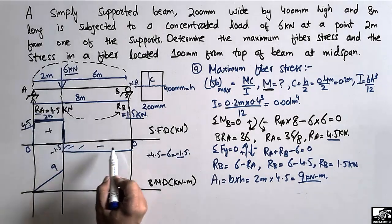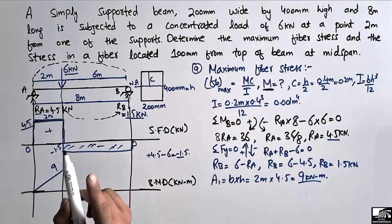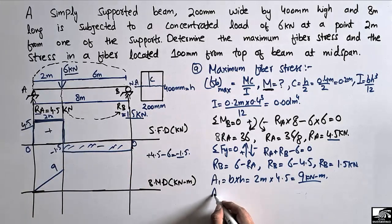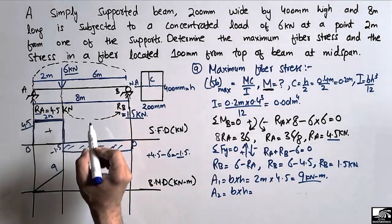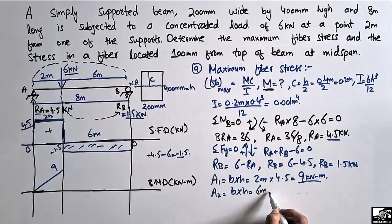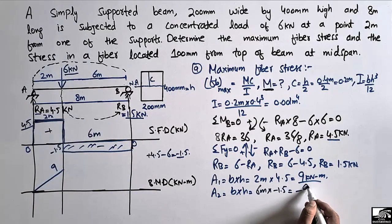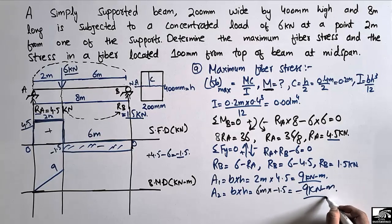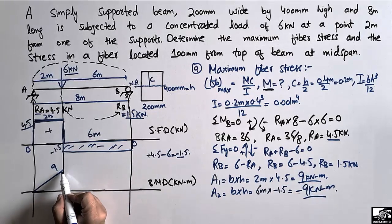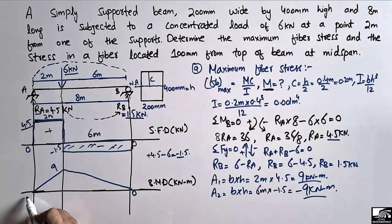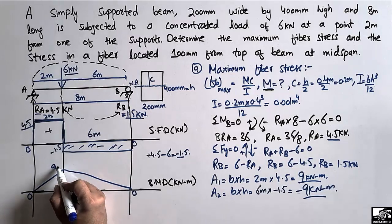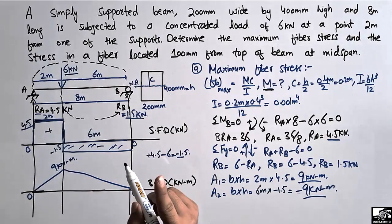The negative shear box has area A2 equal to base times height: 6 meter multiplied by minus 1.5, giving minus 9 kilonewton meter. Adding plus 9 and minus 9 gives zero bending moment at support B. The maximum bending moment is therefore 9 kilonewton meter.